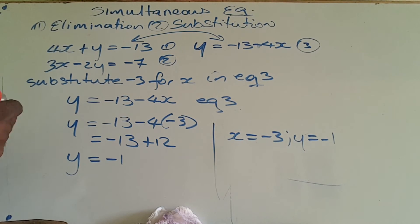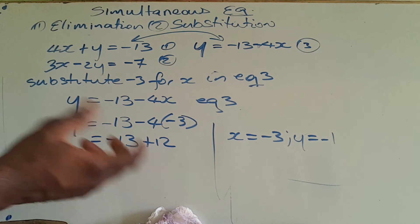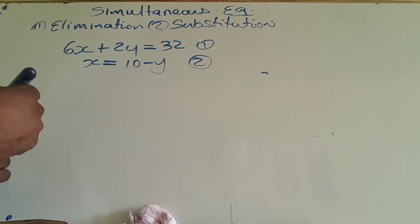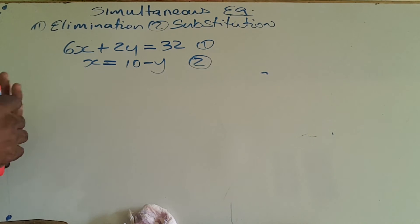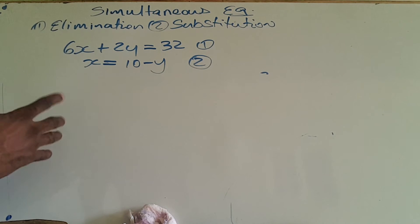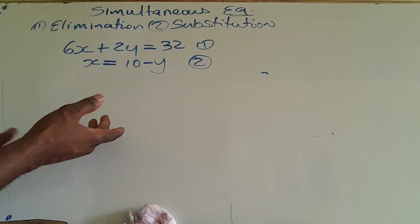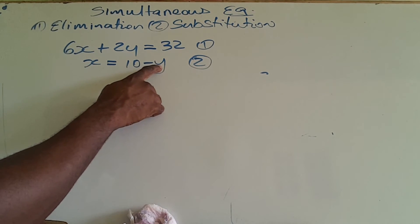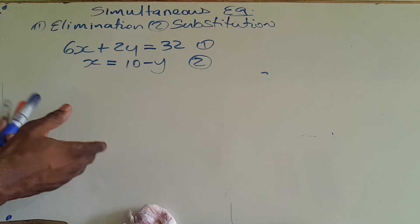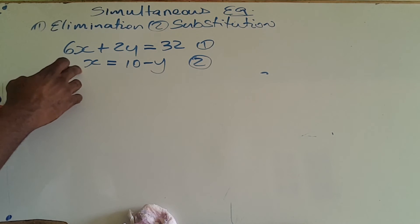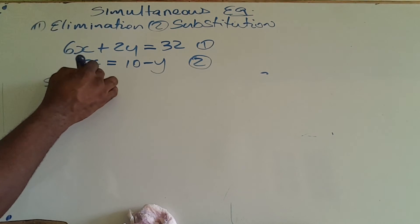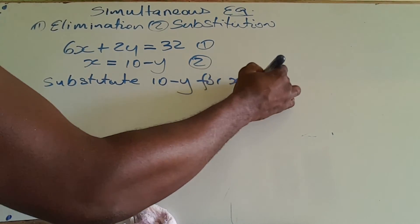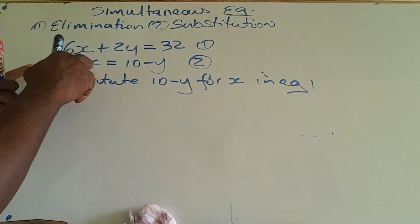Let's look at the last substitution method question. In this case, my first aim is to write x in terms of y or y in terms of x. But this question is already half done because the second equation is already stating that x equals 10 minus y. So I'm going to substitute right away without creating a third equation. I want to substitute 10 minus y for x, and I'm going to do this in equation 1 since the substitution comes from equation 2.